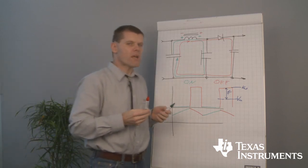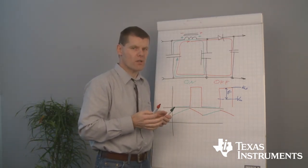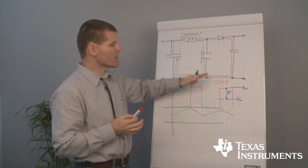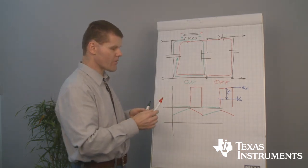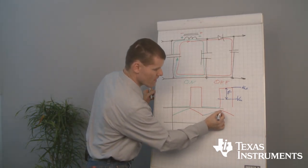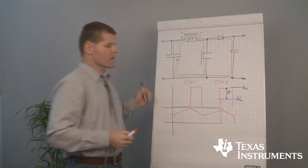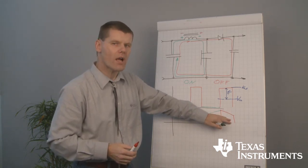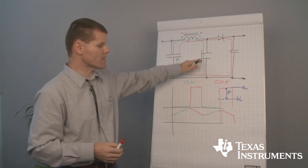But there is a big difference compared to the buck power stage. Energy is only transferred to the output when the switch is open. So the DC current, the DC output current, consists only of the area of the current at the off state of our MOSFET.